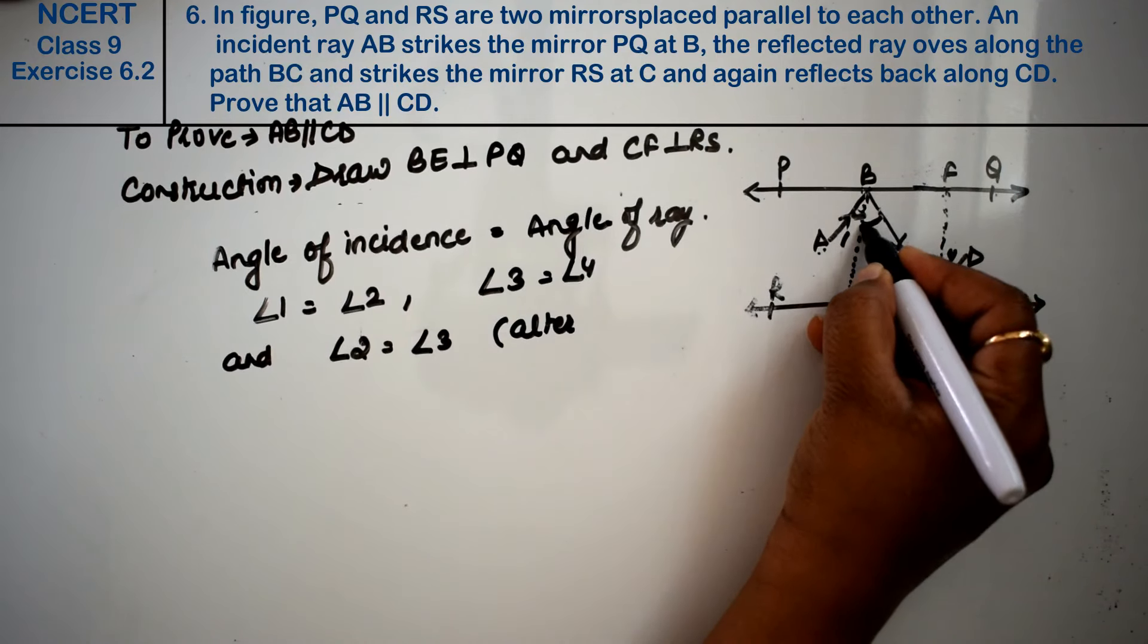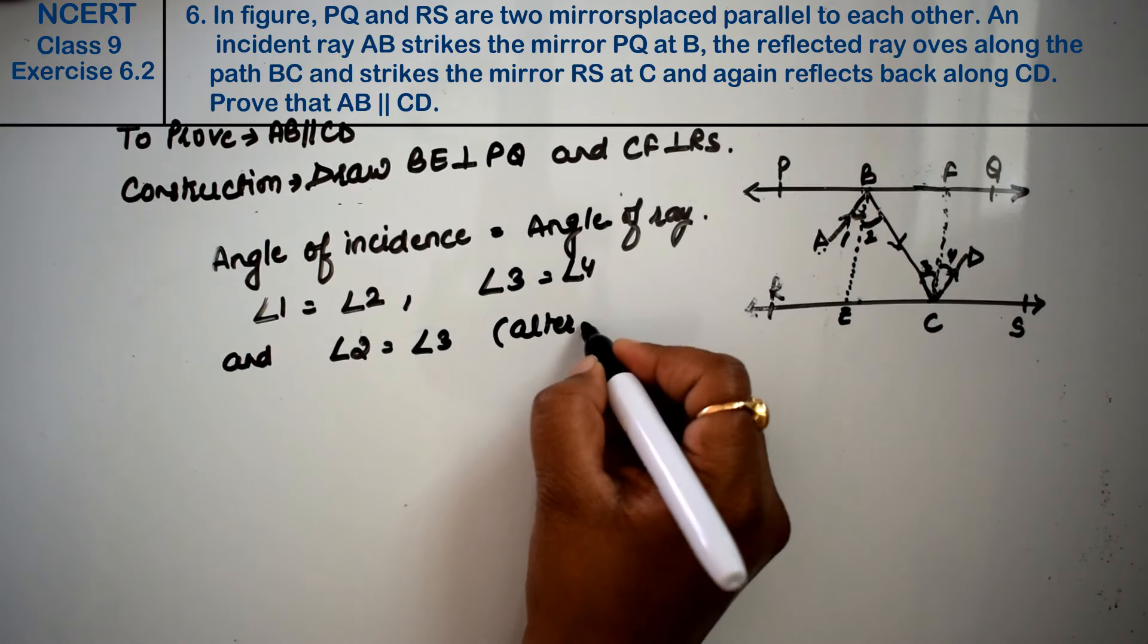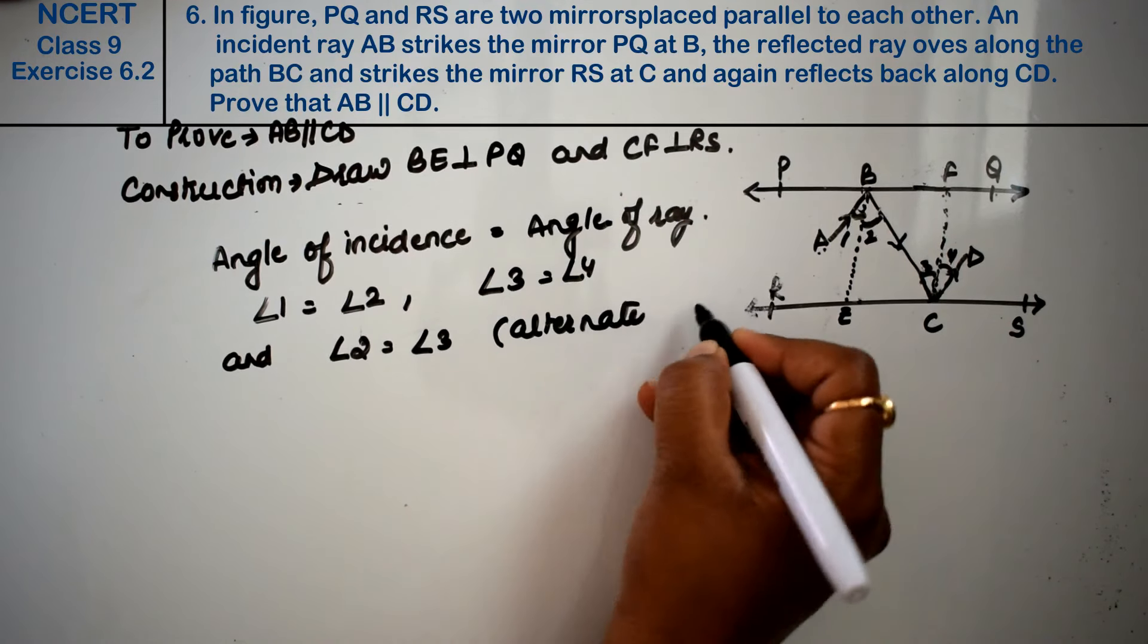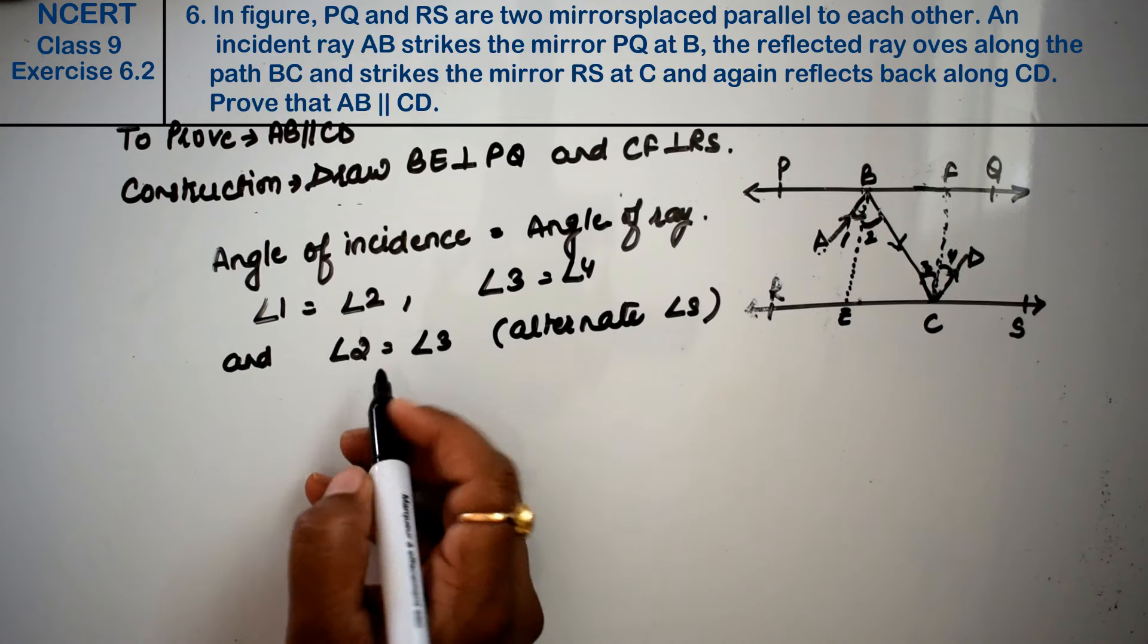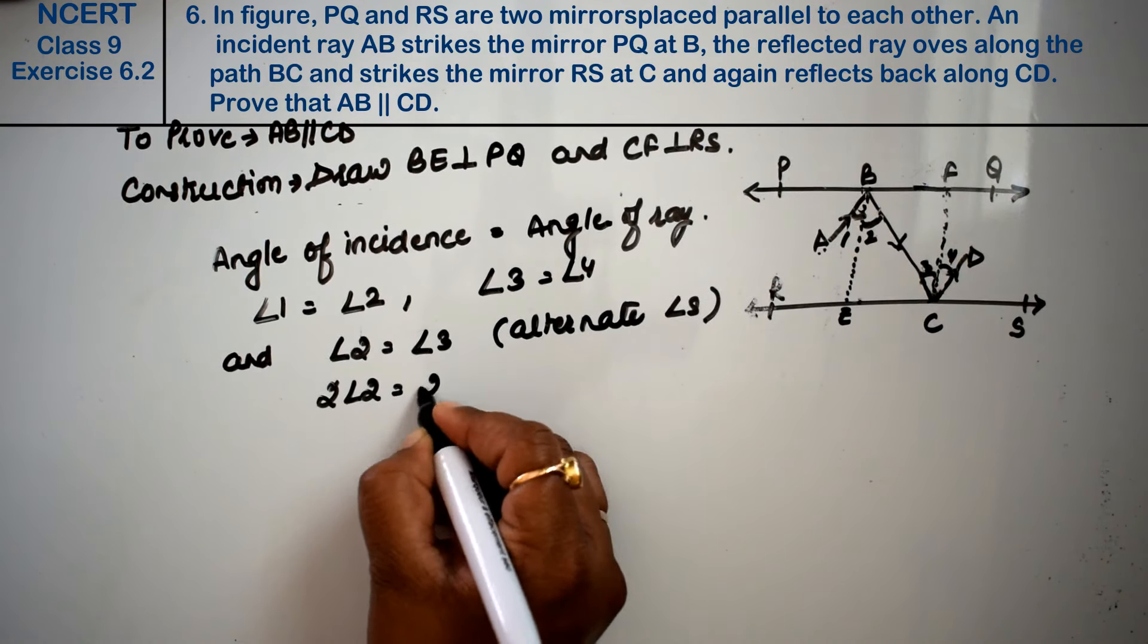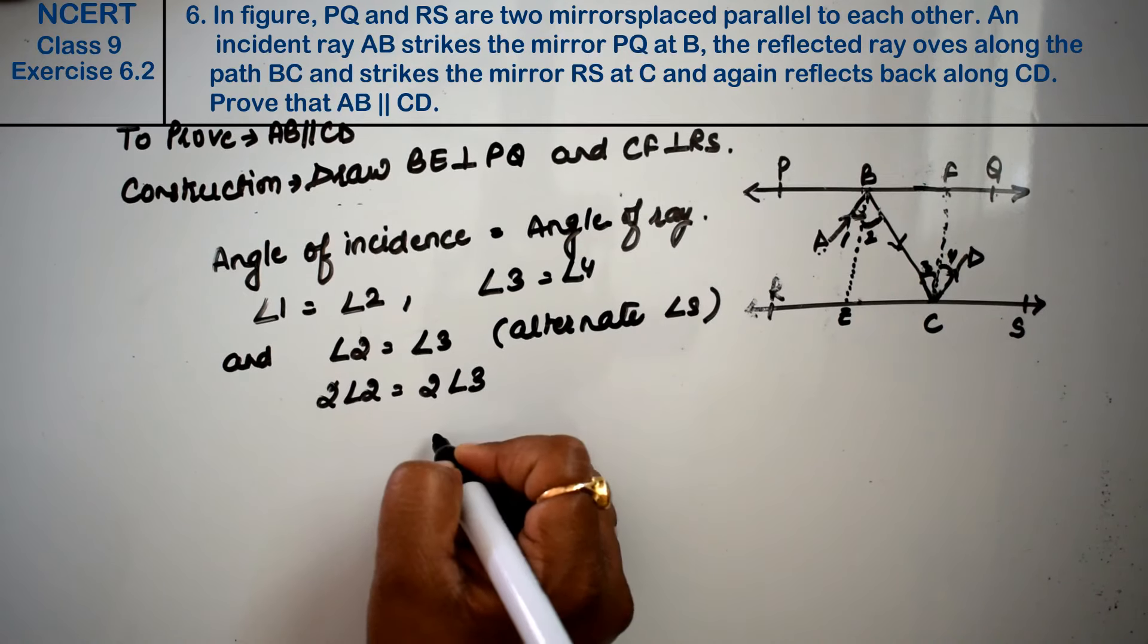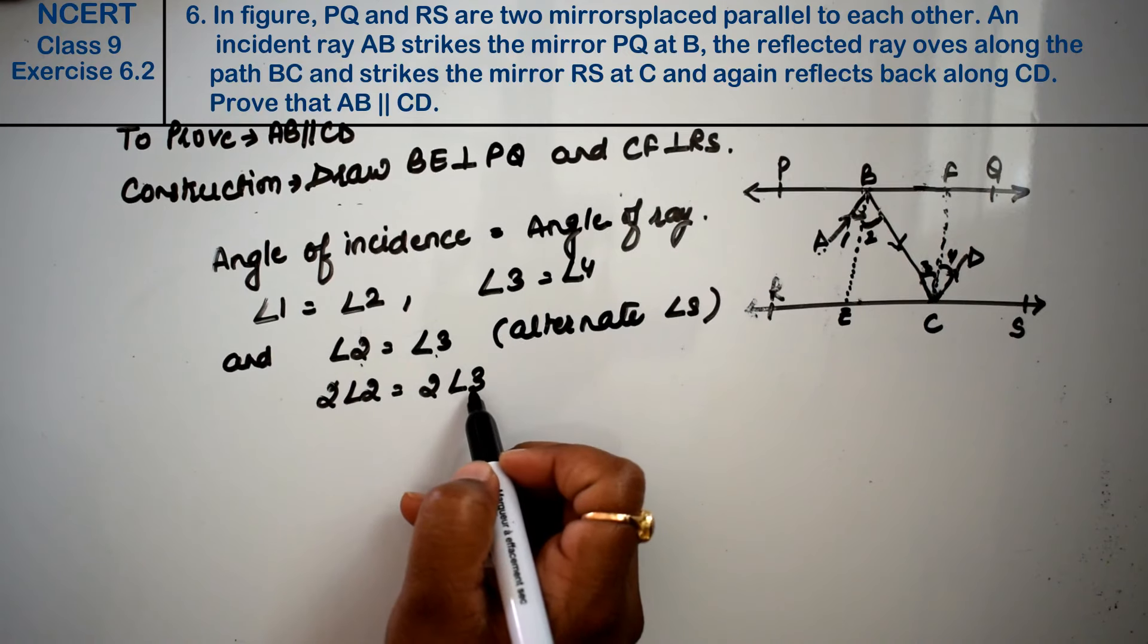Why is this angle equal to this angle? Because there are alternate angles. Friends, when these angles are equal, then the angle twice of angle 2 is also equal to angle twice of angle 3.